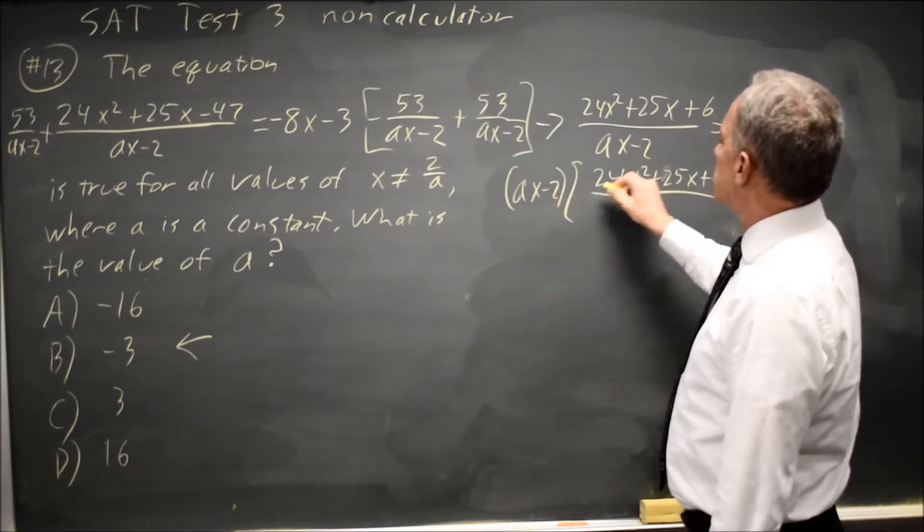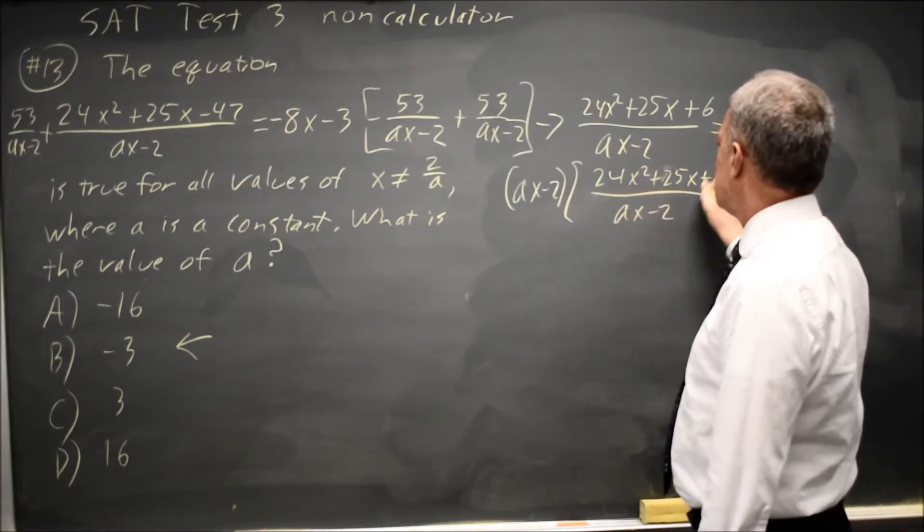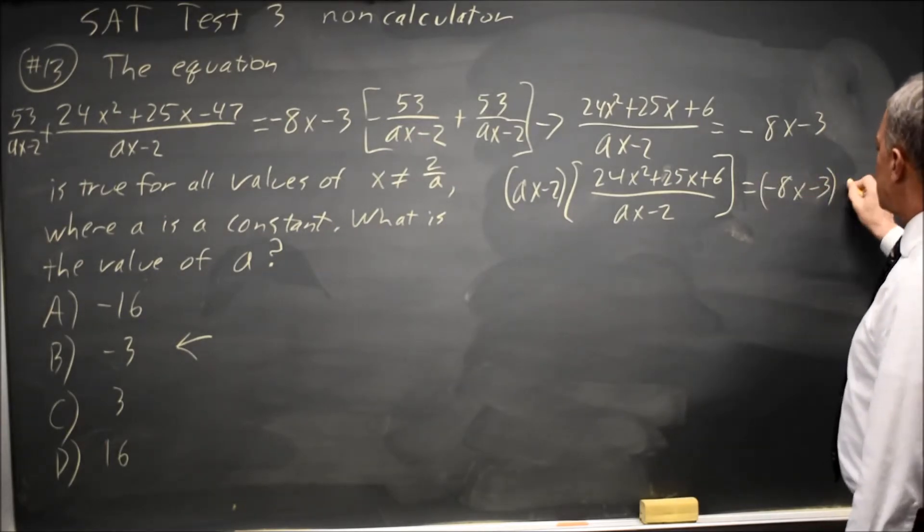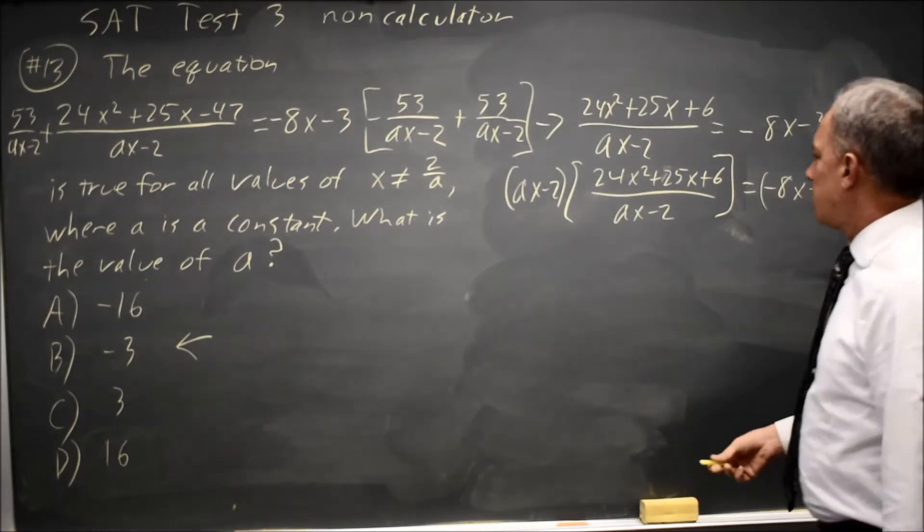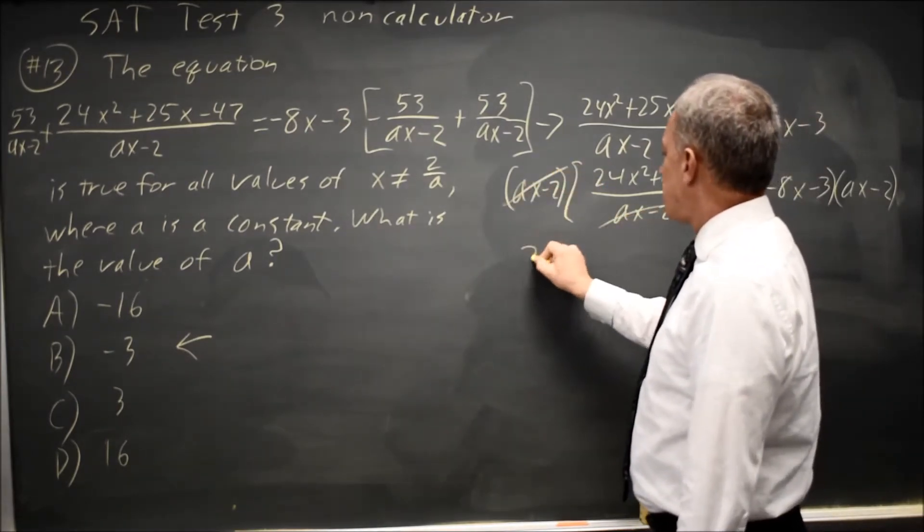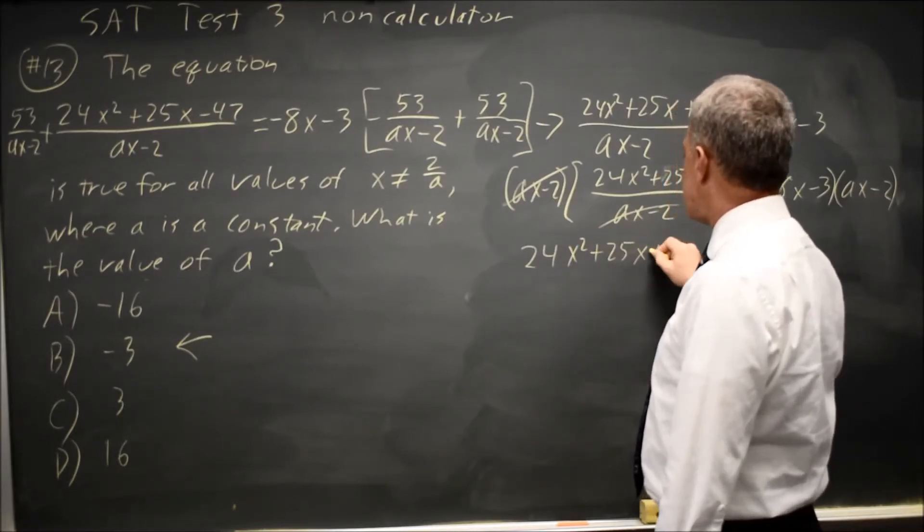Multiplying by AX minus 2: AX minus 2 times 1 over AX minus 2 is 1, leaving the left-hand side as 24X squared plus 25X plus 6.